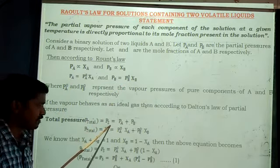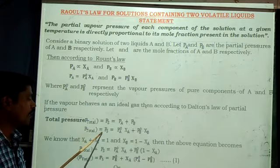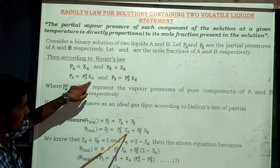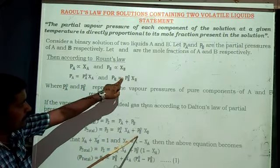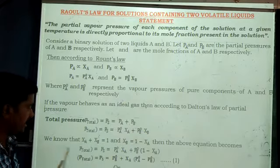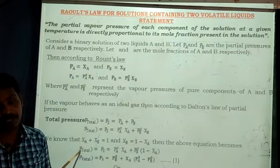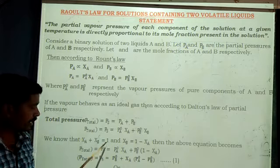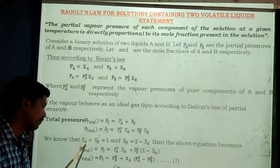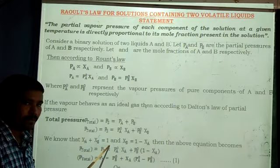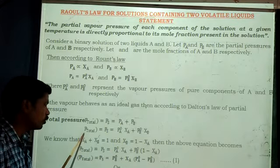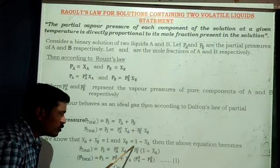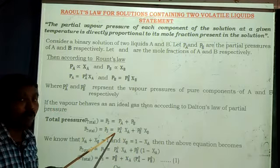Let us substitute the values. P_total or PS = PA⁰·XA + PB⁰·XB. We also know that, according to mole fractions, the mole fraction of A plus the mole fraction of B equals 1. So if we take XB to the right-hand side, XB = 1 − XA.